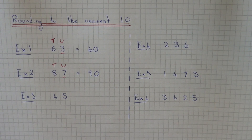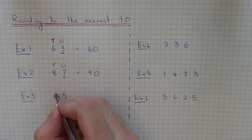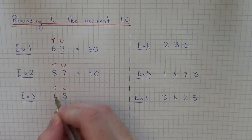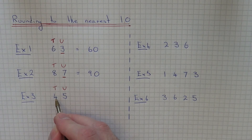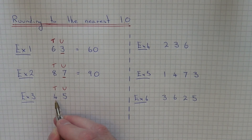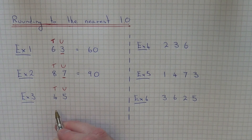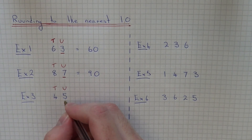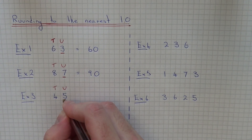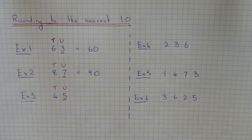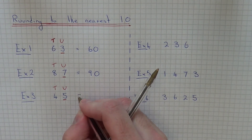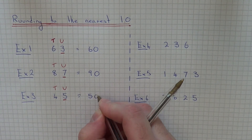Let's have a look at our third example. This time we have to round forty-five to the nearest ten. If we look at our tens column, we have four tens, so we've got two possible answers. It will either be forty if we round down, or fifty if we round up. Look at the number in the units column, which is a five. Since that number is five or above, we're going to round the number up to fifty, because the number is exactly halfway.